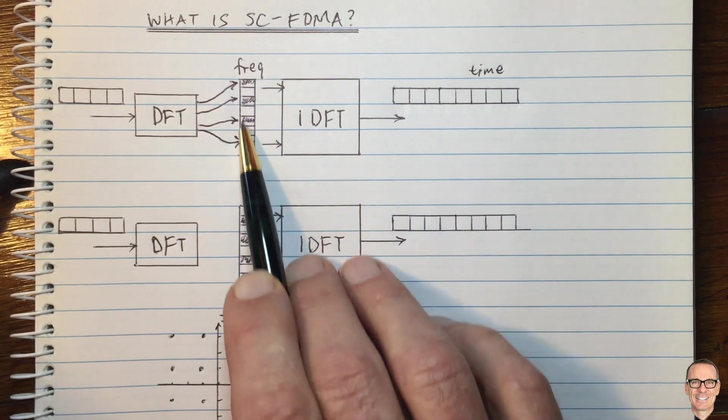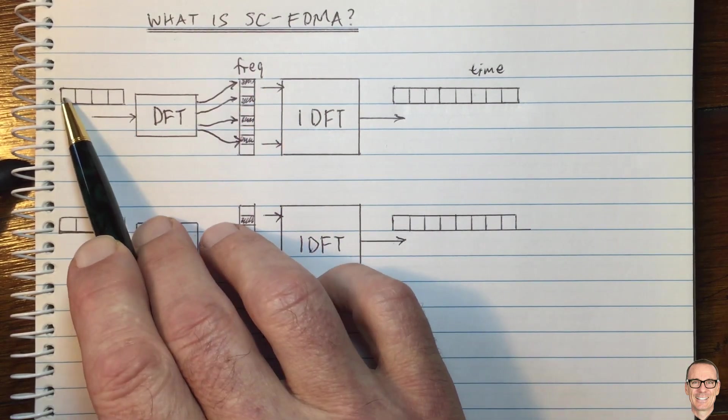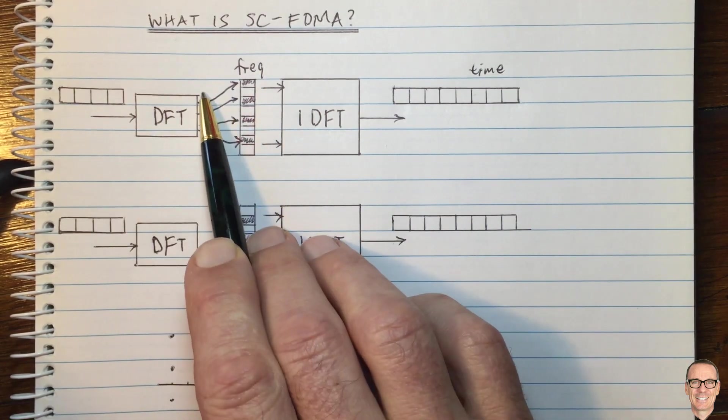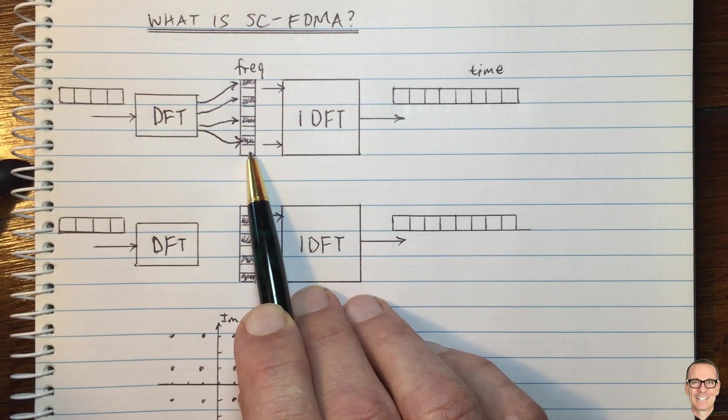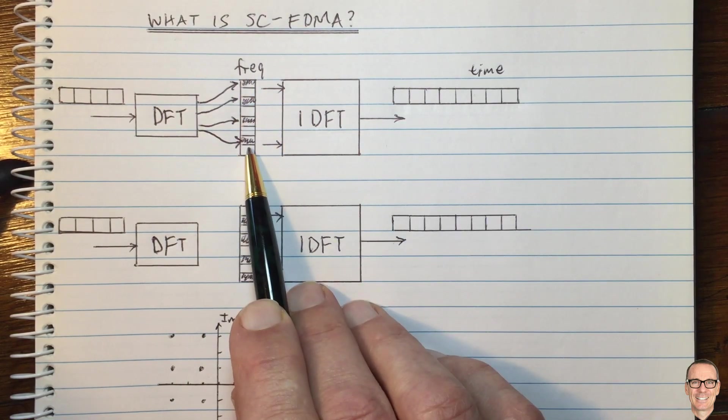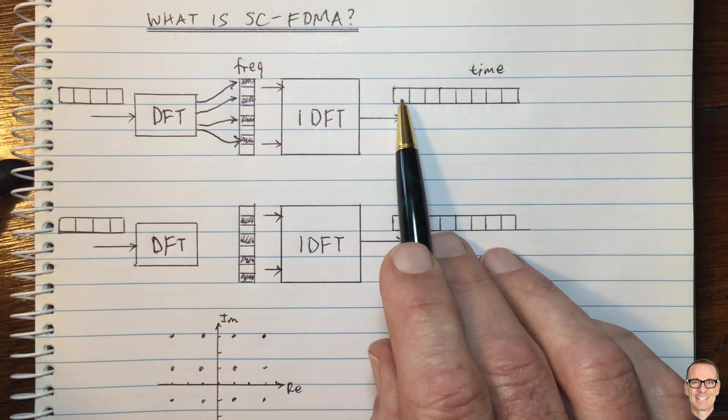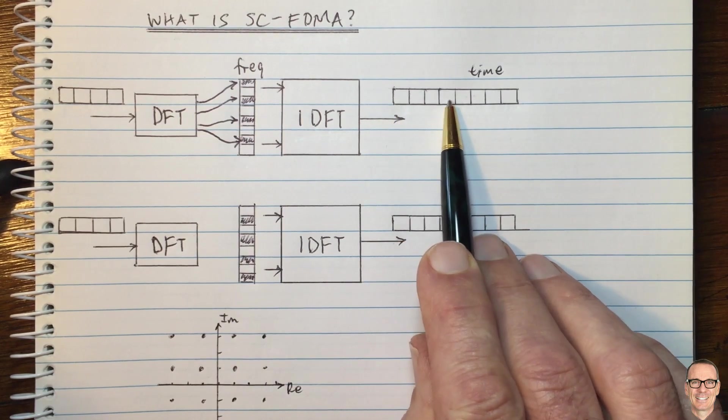So here we are expanding in the frequency domain. We're taking, in this case, four, a vector of length four and expanding it into a vector of length eight. So that is a frequency expansion. And what that's going to mean is you're going to get a time domain contraction.